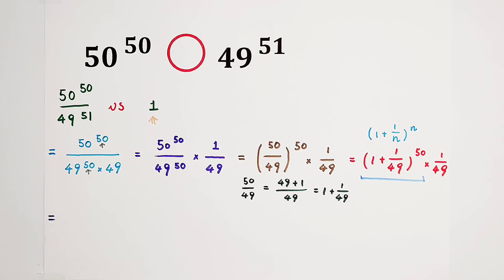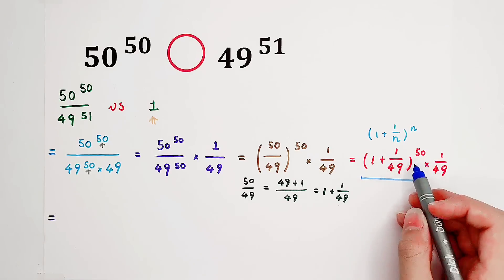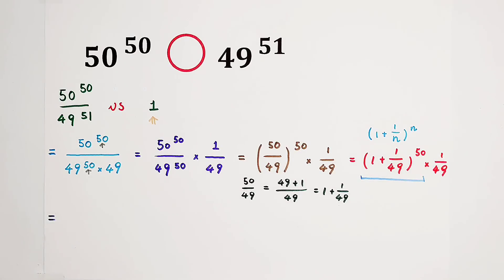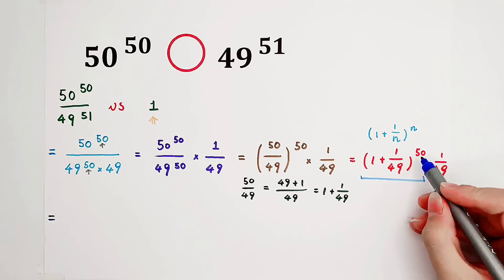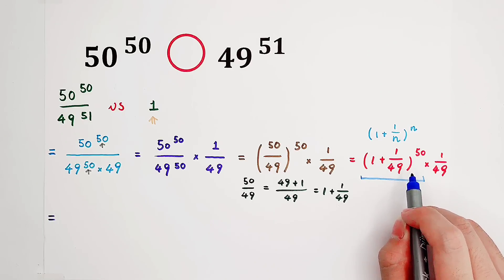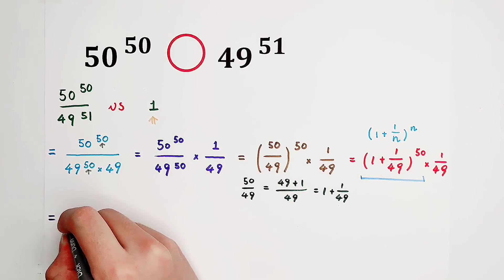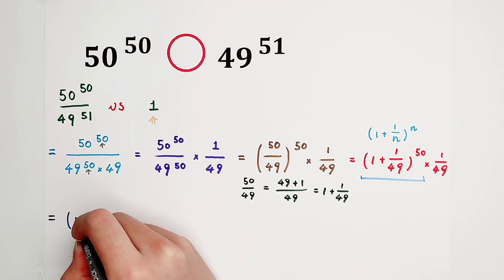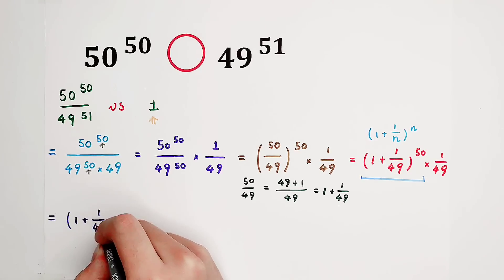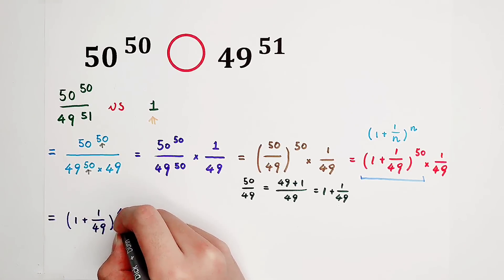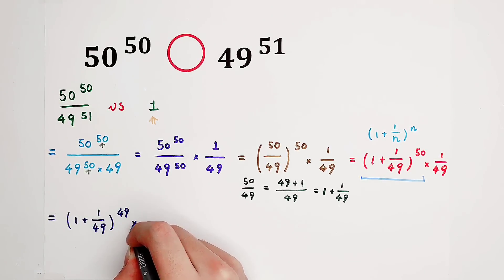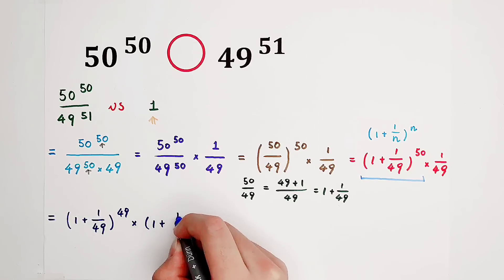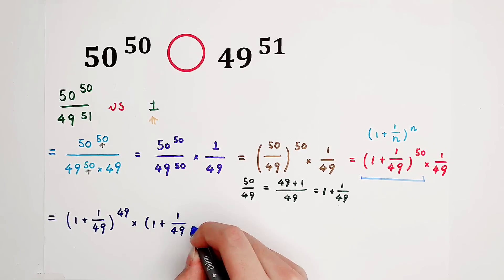I have a trick. Look, we can separate a 49 from this 50. That means I can consider 50 as 49 plus 1. So it can be written as 1 plus 1 over 49, all to the power of 49, times 1 plus 1 over 49, and then times 1 over 49. Don't forget.